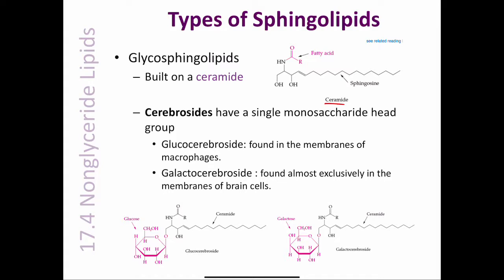The cerebrosides are characterized by the presence of a single monosaccharide head group. Two common cerebrosides are glucocerebroside, found in the membranes of macrophages — cells that protect the body by ingesting and destroying foreign microorganisms — and galactocerebroside, found almost exclusively in the membranes of brain cells. Glucocerebroside consists of a ceramide bonded to the hexose glucose, and galactocerebroside consists of a ceramide joined to the monosaccharide galactose.